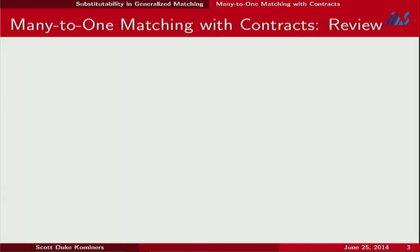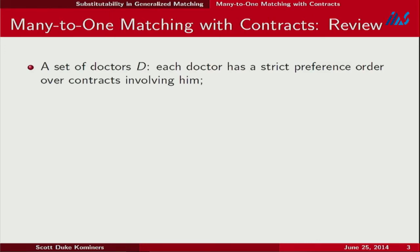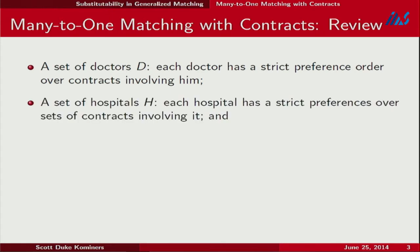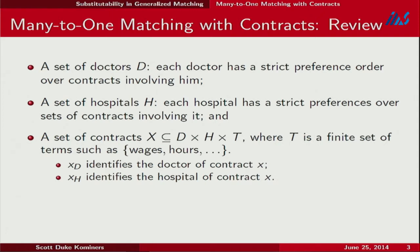In many-to-one matching with contracts, we have a set of doctors with strict preference orders over contracts and a set of hospitals with strict preferences over sets of contracts associated to them. Contracts are elements of the product space: doctors cross hospitals cross terms. There's some finite set of terms — wages, hours worked, partnerships — whatever associated data you want to store in your contract set.